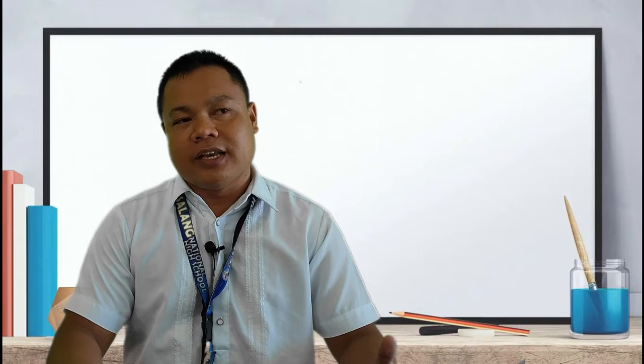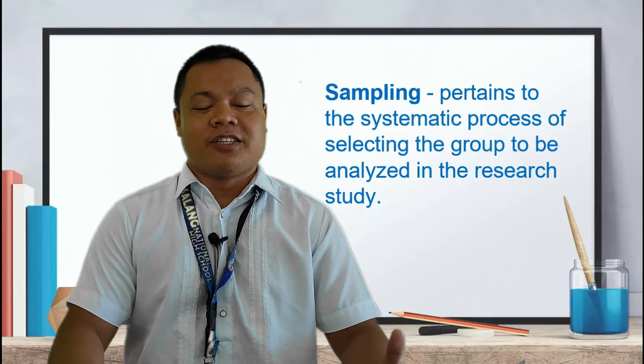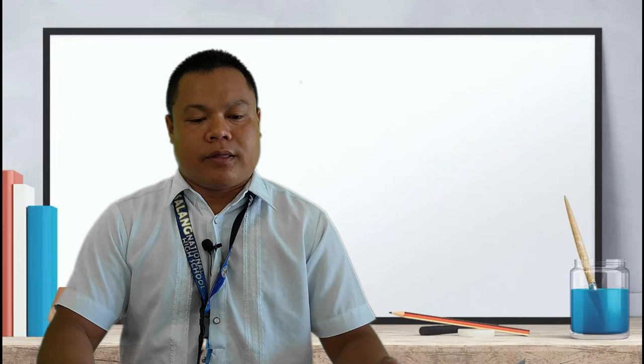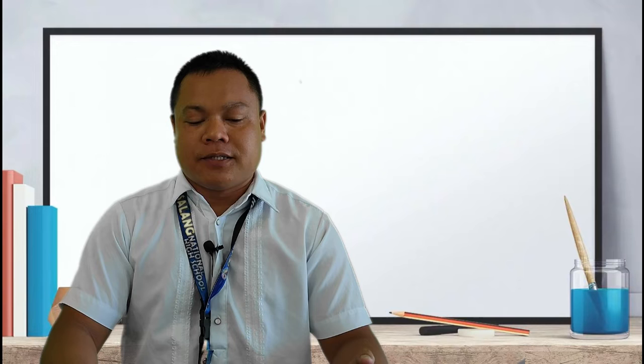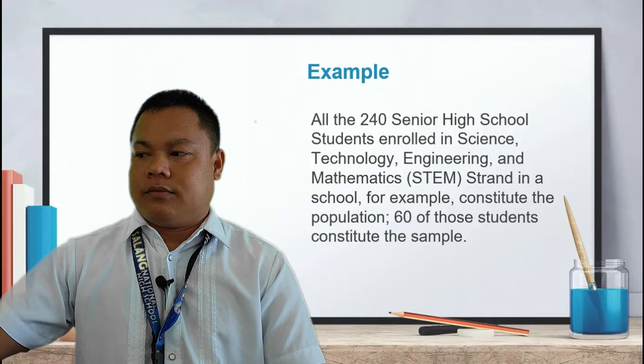This is where sampling comes in. Sampling pertains to the systematic process of selecting the group to be analyzed in a research study. The goal is to get information from a group that represents the target population. Once a good sample is obtained, the generalizability and applicability of the findings increases.